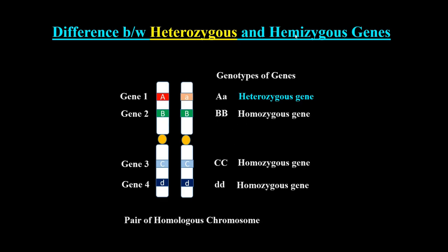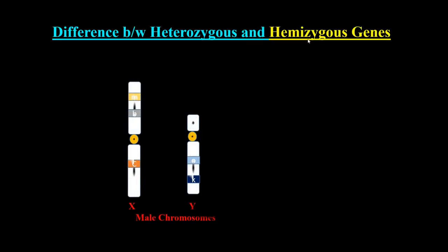In the hemizygous condition, there is only one copy of an allele for a particular gene. For example, we have only one X and one Y chromosome. Genes located on the X chromosome — such as gene 6, gene 7, and gene 8 — have only one allele. Similarly, gene 9 and gene 10 on the Y chromosome also have only one allele.